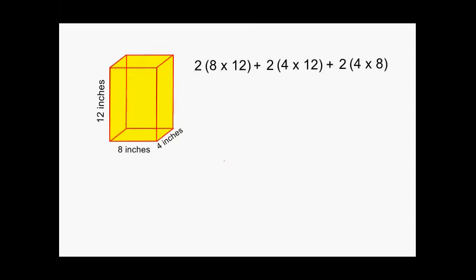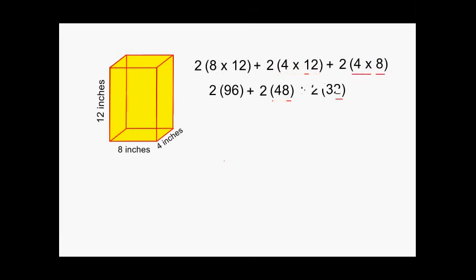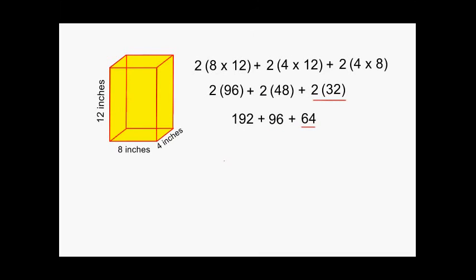Now we simplify to find the surface area. Eight times 12 equals 96, so the front and back together give 2 × 96 = 192 square units. Four times 12 equals 48, so the right and left together give 2 × 48 = 96 square units. Four times 8 equals 32, so the top and bottom together give 2 × 32 = 64 square units. Adding 192 + 96 + 64, we get a total surface area of 352 square inches.